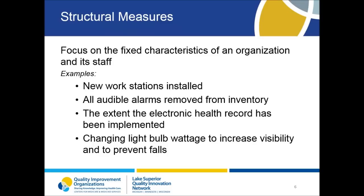Structural measures are related to changes in the physical aspects of the environment or related to equipment. For example, in a PIP project on making the environment more accessible, one of the interventions is to change door handles throughout the building so doors are easier to open. A permanent structural change like changing door hardware doesn't need to be monitored once installed. However, monitoring whether the structural change is providing the intended outcome is important — through observation, interviews, or surveys. What we want to know is that people have an easier time opening and passing through the doorway after the new hardware is installed.